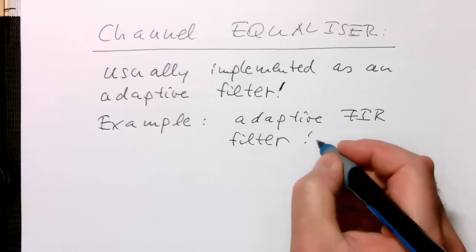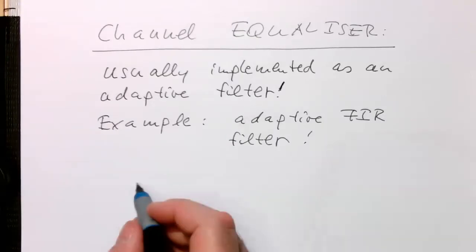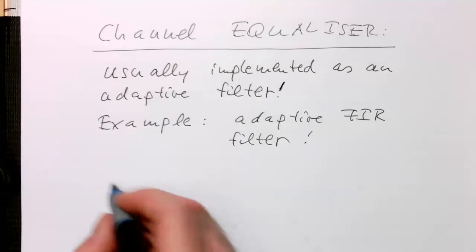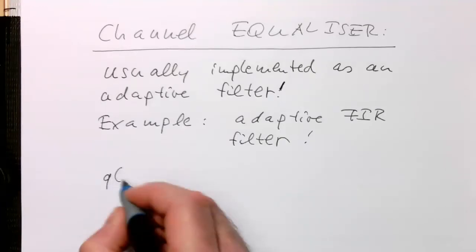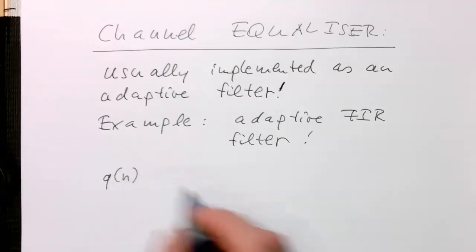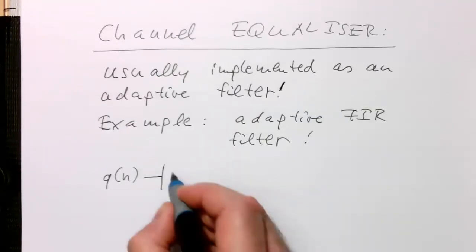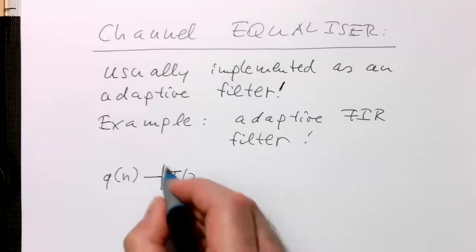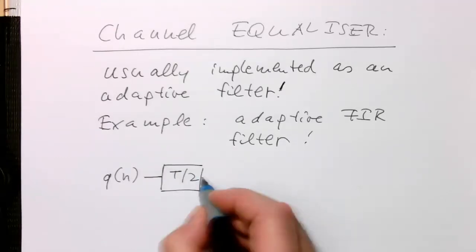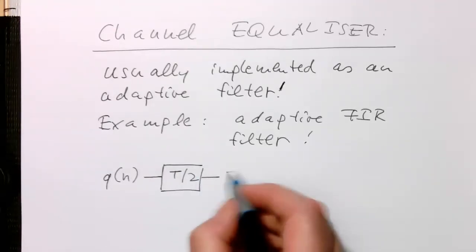So what's an FIR filter? It's a very simple concept. If we have here samples, and so what we do is we've got our symbol interval. Just to be a bit more precise, we delay this by t half.